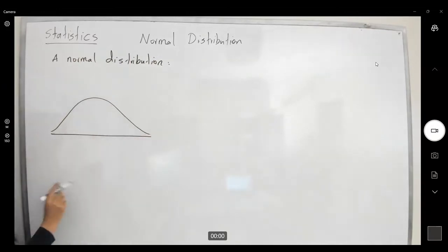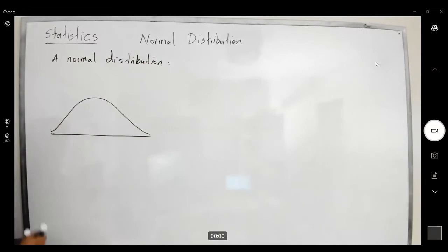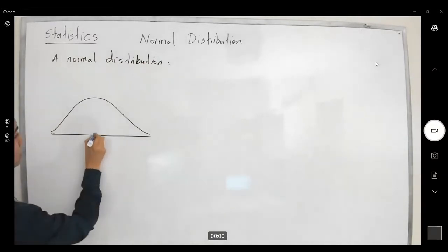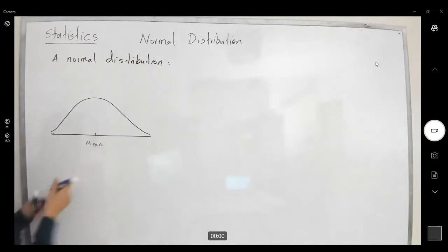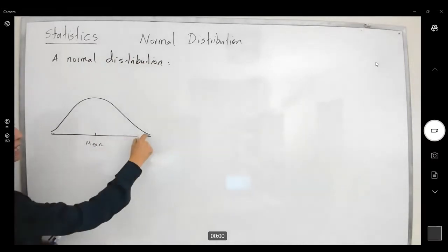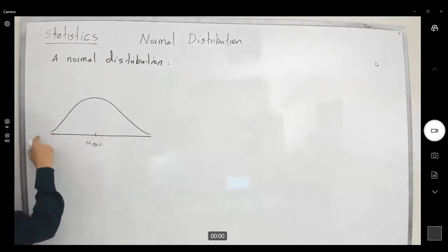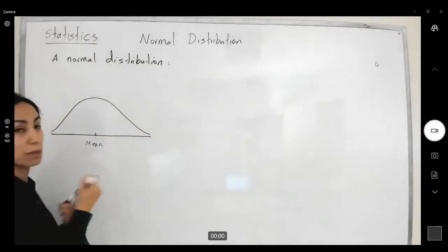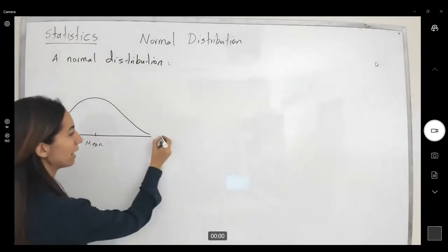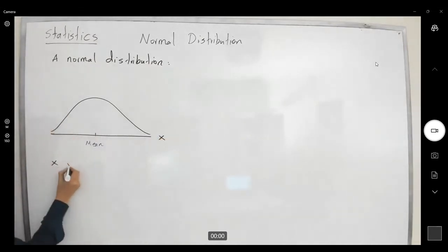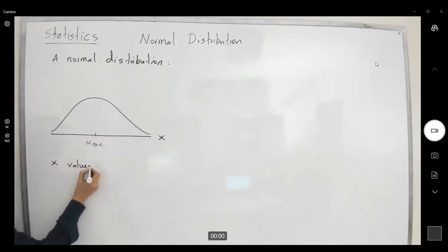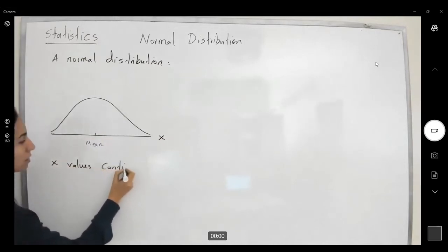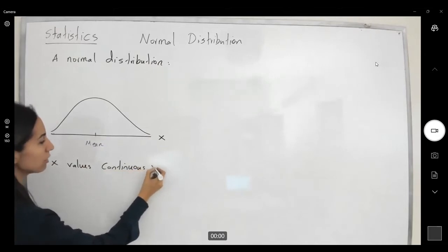Remember that the graph is symmetric to the mean. There are always gaps in the graph, and the horizontal axis represents x values. So x values are continuous variables.